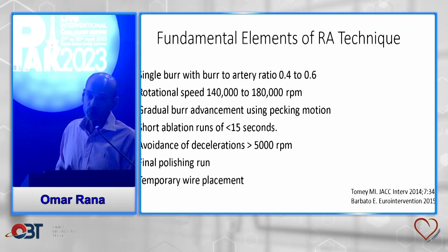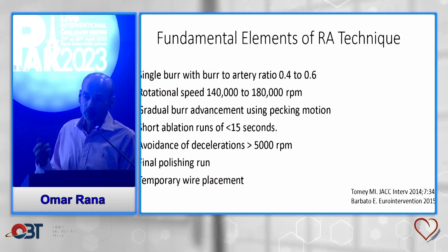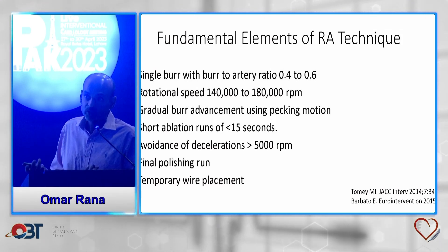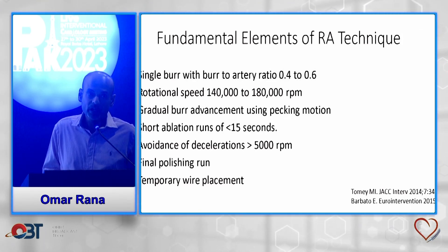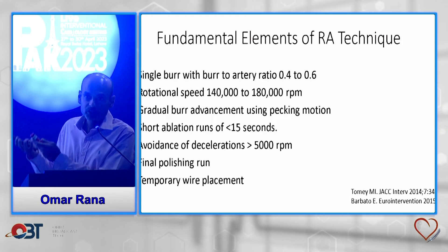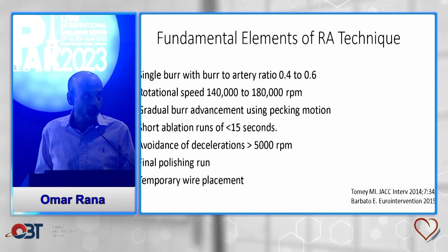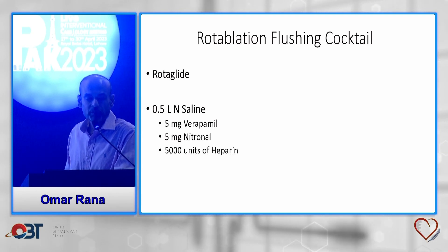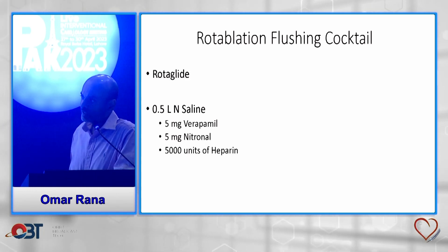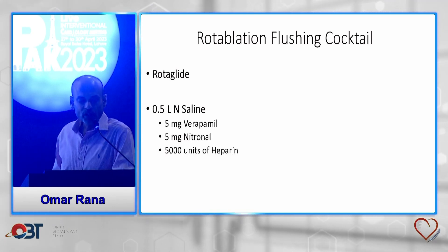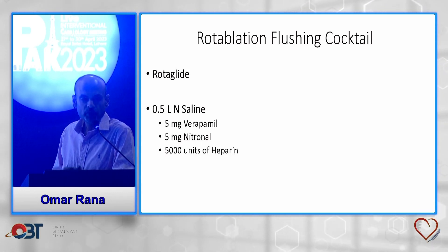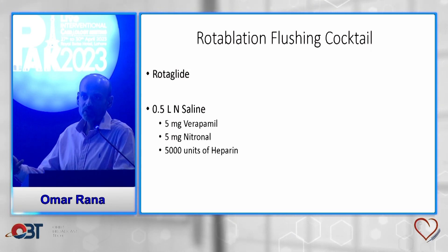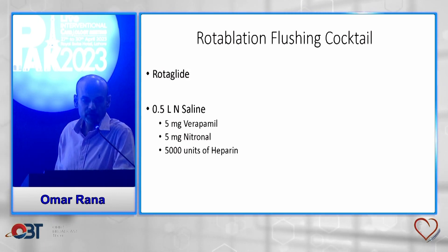I generally never use a temporary pacemaker — only in patients about to have rotablation of a single last remaining artery. Even then, I use what I call a provisional pacing approach: I put the pacing wire in the right atrium because many of these patients are elderly and the RV is paper thin. I actually had a complication where the rotablation was fine but the patient had an RV perforation and ended up in cardiac surgery. For the flushing cocktail, in half a liter of saline put 5 mg of nitroglycerine, verapamil, and 5,000 units of heparin — I use a full liter and double the drug dosage.